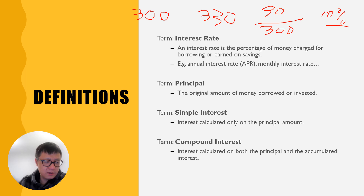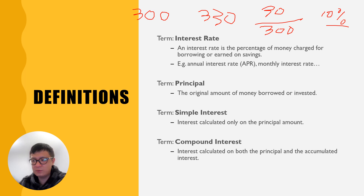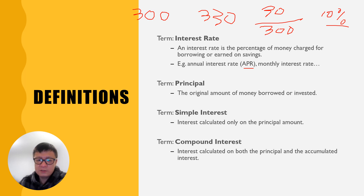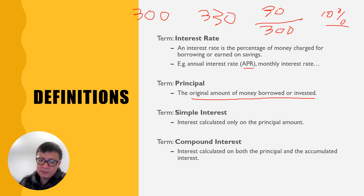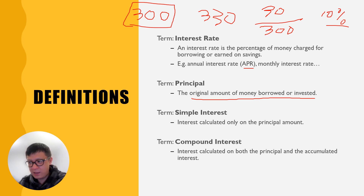Because it is calculated for a month, it is also called monthly interest rate. But that's not really often used in real life. People really don't deal with monthly interest rate. In real life, people are dealing with annual interest rate, which also has another name called annual percentage rate — APR. Another fairly important term is principal, which is basically the original amount of money that you borrowed or invested. In our example, the principal is $300.